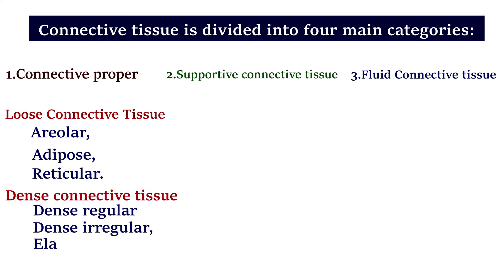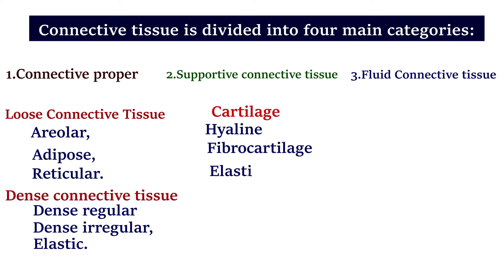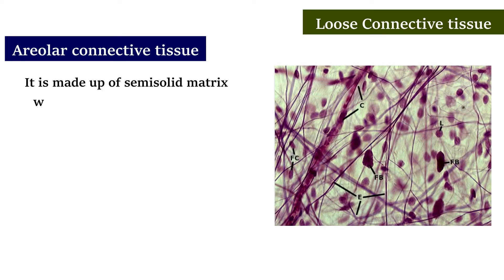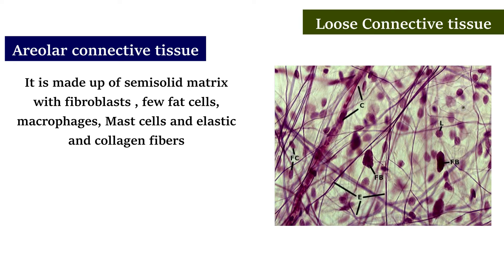Dense connective tissue is divided into dense regular, dense irregular, and elastic. Supportive connective tissue is divided into cartilage and bone. Cartilage is further divided into hyaline, fibrocartilage, and elastic. Fluid connective tissue is divided into blood and lymph.